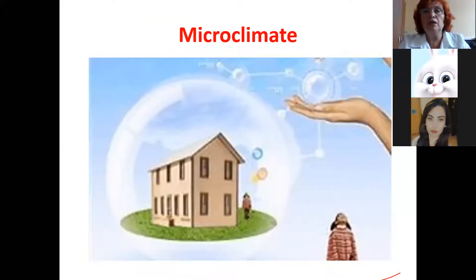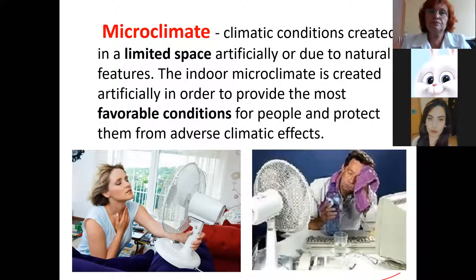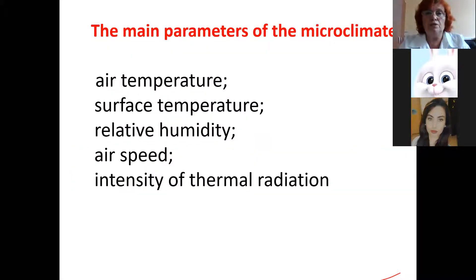Microclimate is climatic conditions created in a limited space artificially or due to natural features. The indoor microclimate is created artificially in order to provide the most favorable conditions for people and protect them from adverse climatic effects. The main parameters of the microclimate are: air temperature, surface temperature, relative humidity, air speed and intensity of thermal radiation.